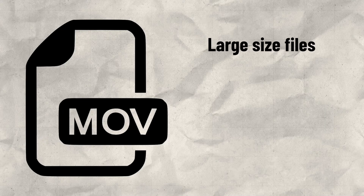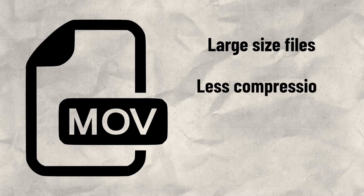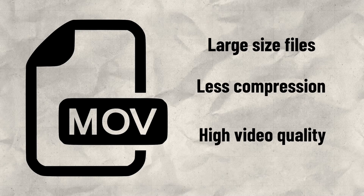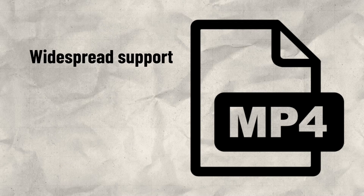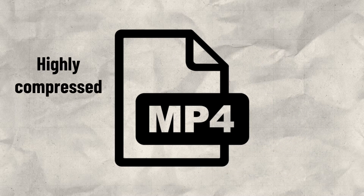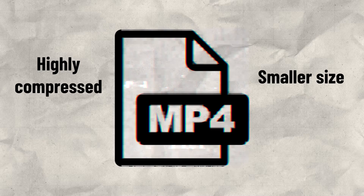MOV files are relatively large-sized files with less compression that are desirable because they retain higher video quality. Then there's MP4, another video format which is more popular because of its widespread support and the fact that it doesn't require QuickTime for playback. Unlike MOV, MP4 files are highly compressed and much smaller in size, resulting in lower image quality.